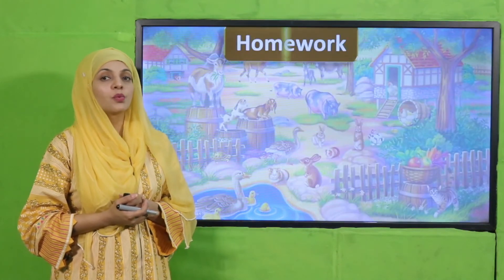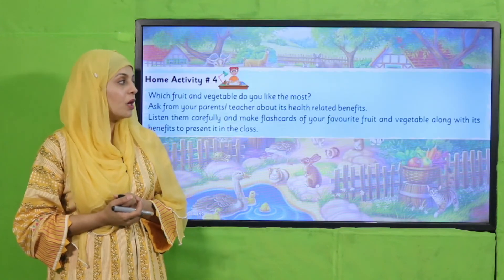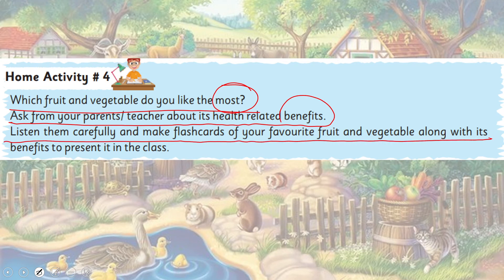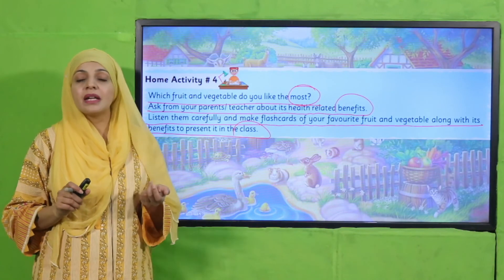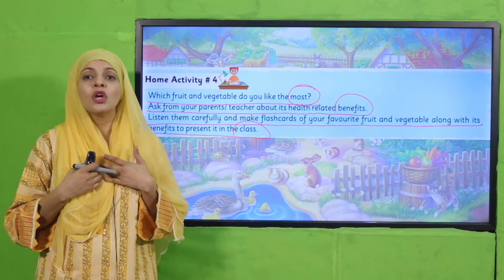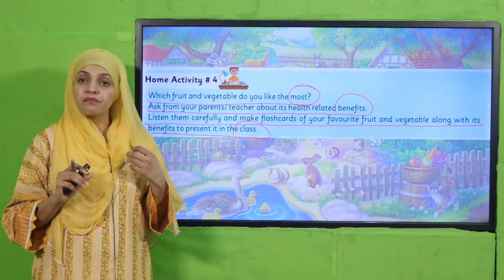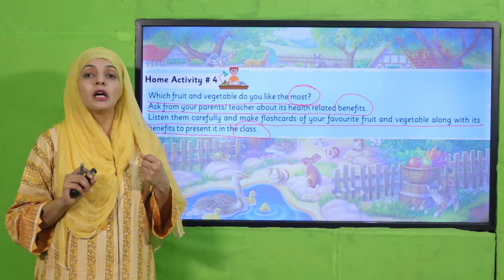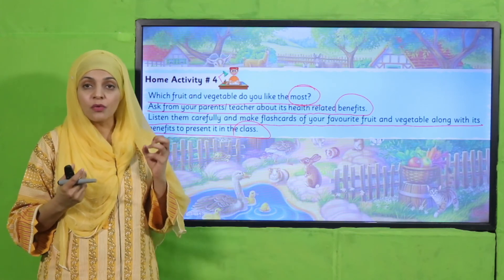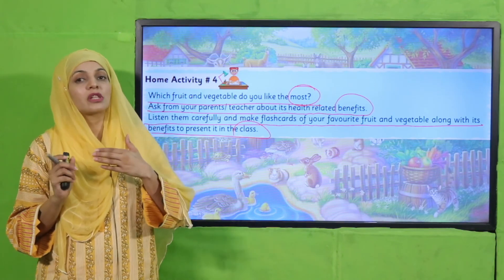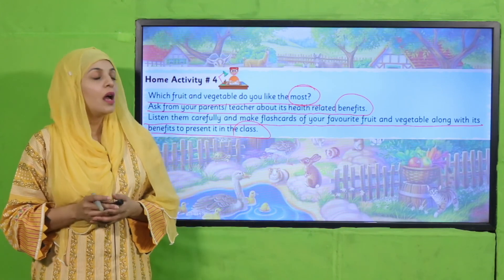I hope everybody has done it. Now let's move forward to the homework. You will do home activity number 4. Ask your parents or teacher which fruit or vegetable you like the most, find out its health-related benefits, and make flashcards of your favorite fruit or vegetable along with its benefits to present in class. For example, if I like potatoes — potatoes are rich in carbohydrates and are a very rich source of energy. Make a picture flashcard and write its benefits, then present it in class.